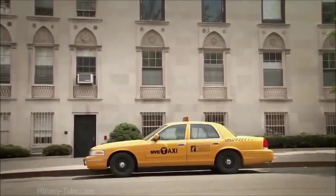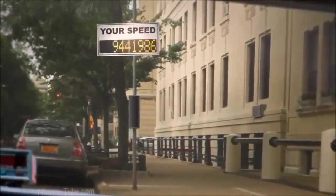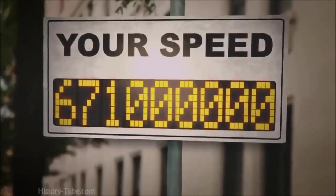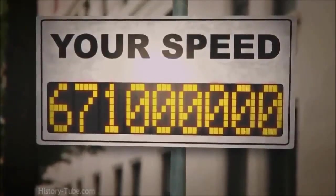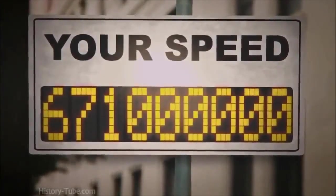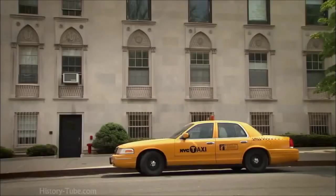But now imagine that instead of measuring the speed of the cab, you have a radar sign that measures the speed of the light coming off its headlights. That sign would measure the light traveling at an astounding 671 million miles an hour. Now, when the cab starts moving, you'd think that the speed of the light would increase by the same amount as the car. After all, you'd think that the moving cab would give the light an extra push.